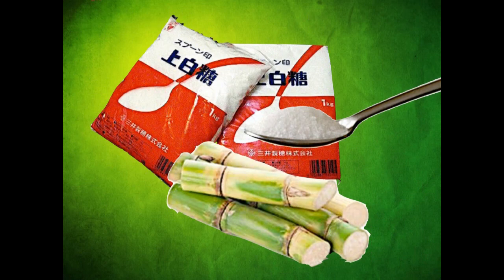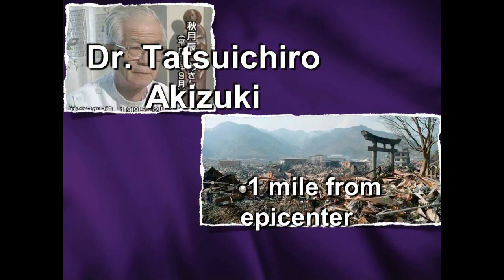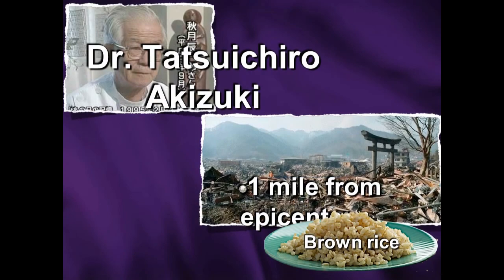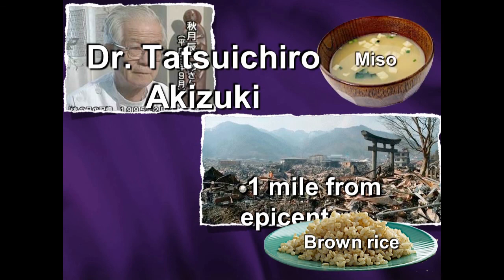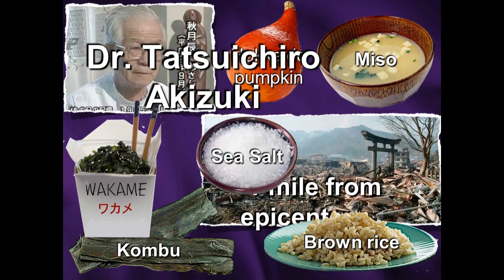What did Dr. Akazuki do? First, no sugar for anybody. Second, he put them on a special diet. The principle: whole grain — not white flour, whole grain — specifically genmai (brown rice). Miso soup, which has soy and ferments that are very protective from radiation. Hokkaido pumpkin from the squash family. Sea vegetables with high minerals. And sea salt — Himalayan salt is a very good form, containing all the minerals. That's all he did, and nobody got sick.